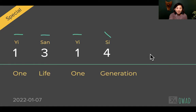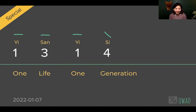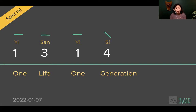And now we have all-numeric expressions: 1314 — almost like a secret code. What do you mean, 1314? It means 'one life, one generation.'